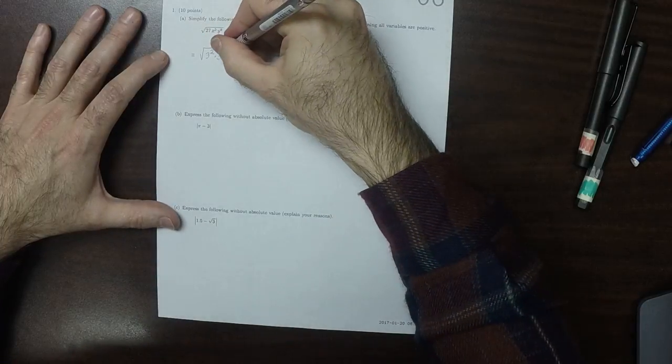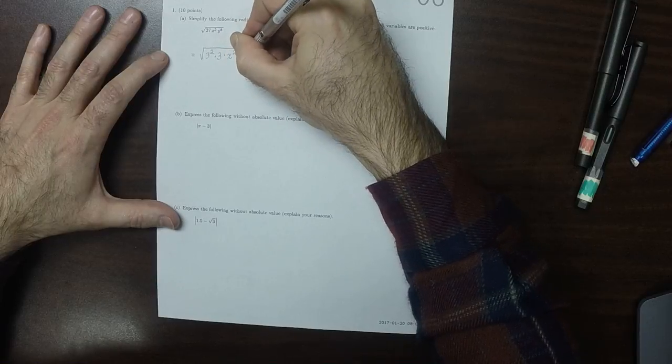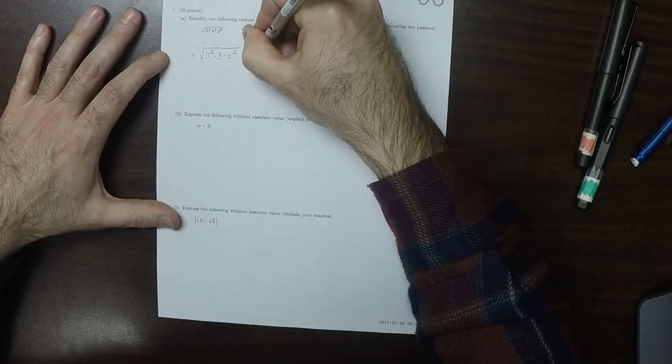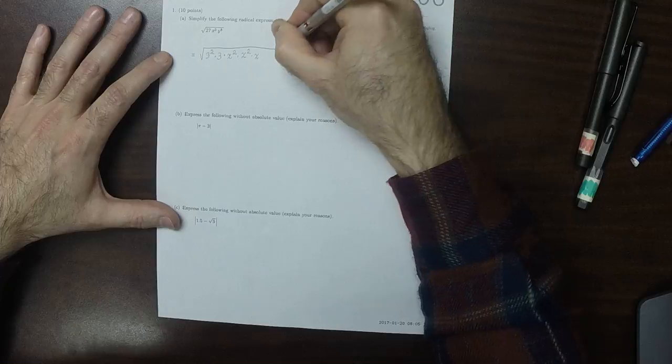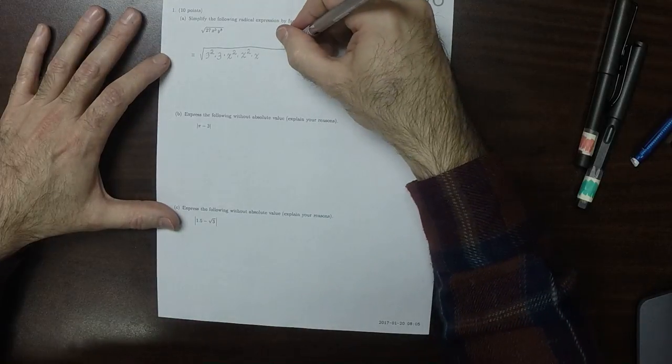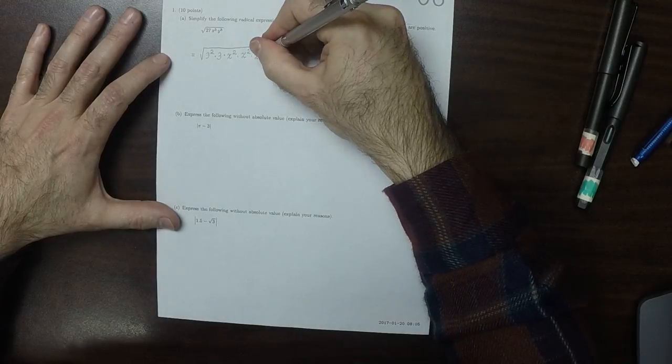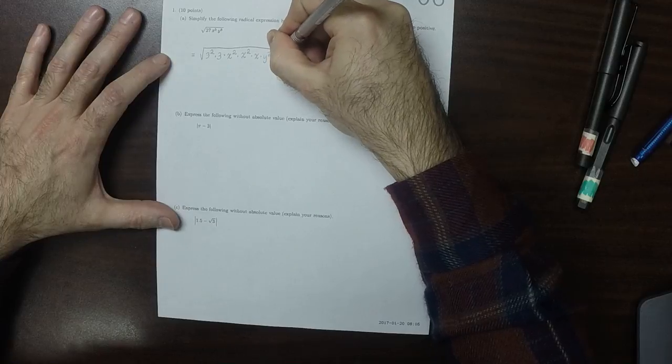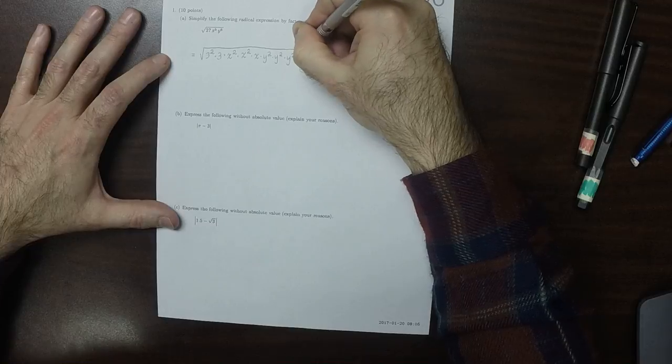x to the 5th can be written as x squared times x squared times x. That's how many x's are in there. And then, y to the 8th can be written as y squared times y squared times y squared times y squared.